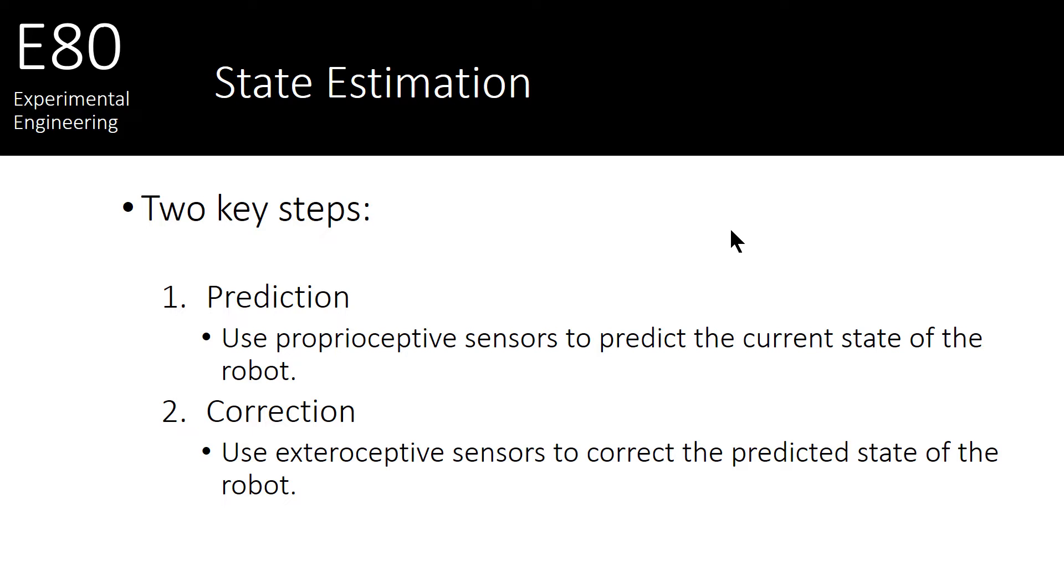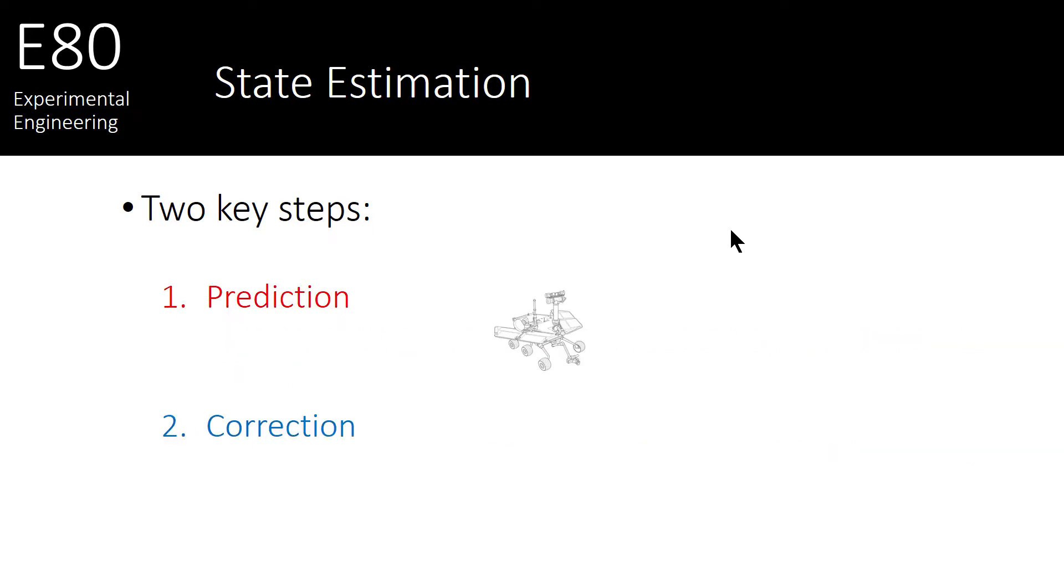Often, the prediction step uses proprioceptive sensors to predict the current state of the robot. These sensors are internal to the robot. Then they'll use exteroceptive sensors to correct the predicted state of the robot. These exteroceptive sensors usually take measurements outside the robot. Let's look at this with a cool animation.